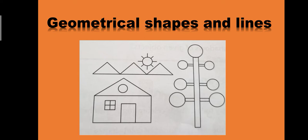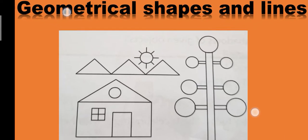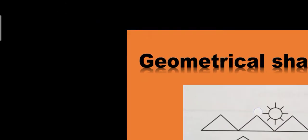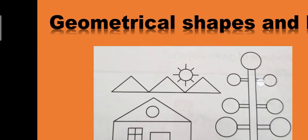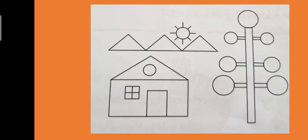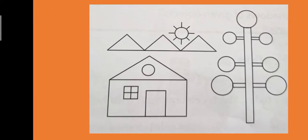Can you see on the screen? There are four types of shapes. Triangle, Rectangle, Square and Circle.